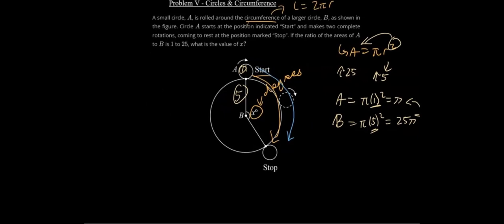To do that, we're going to use the circumference. The circumference of A is equal to 2π times r, which is 1. The circumference of B is equal to 2π times the radius, which is 5. This is 10π. This is 2π.